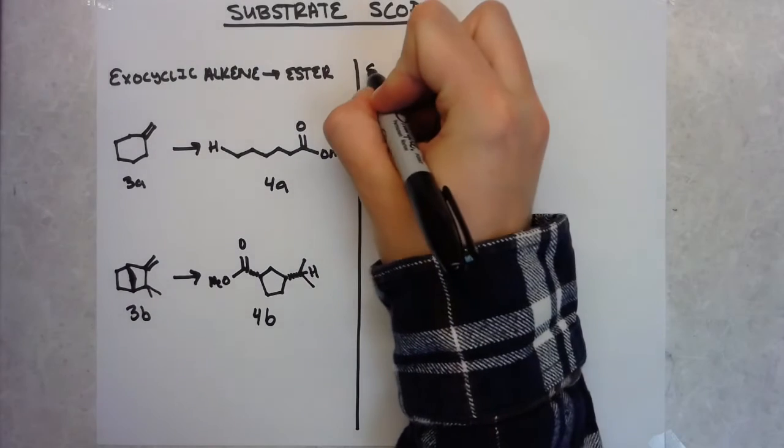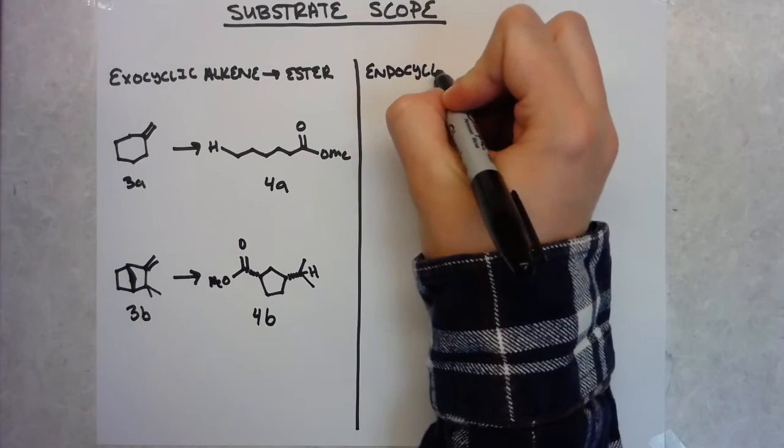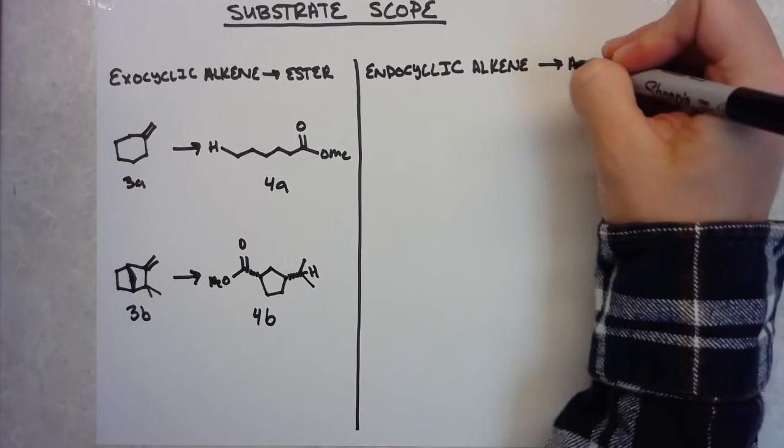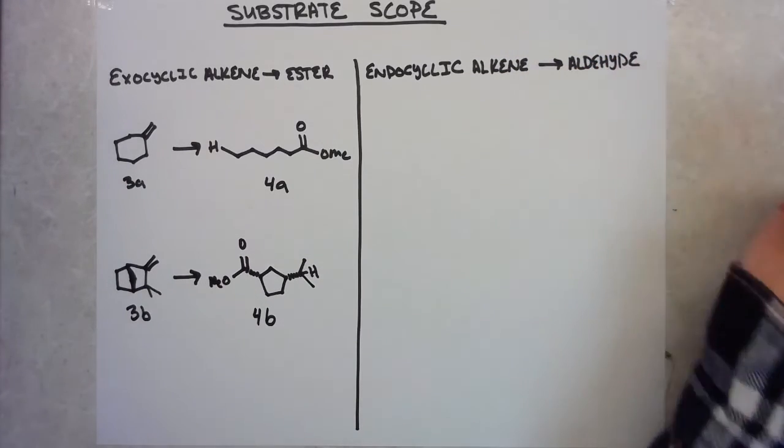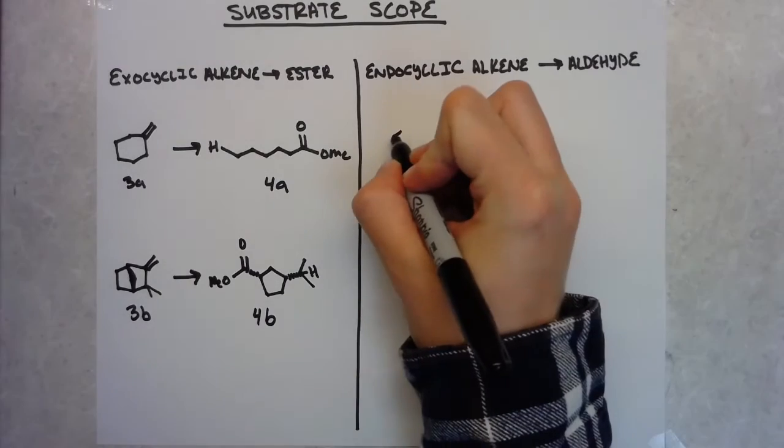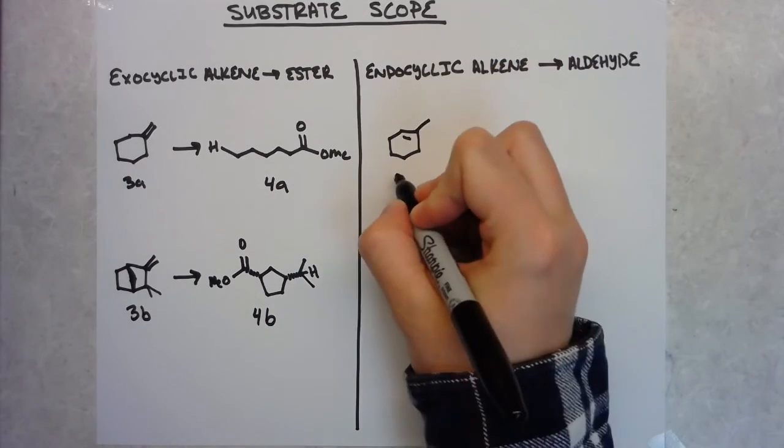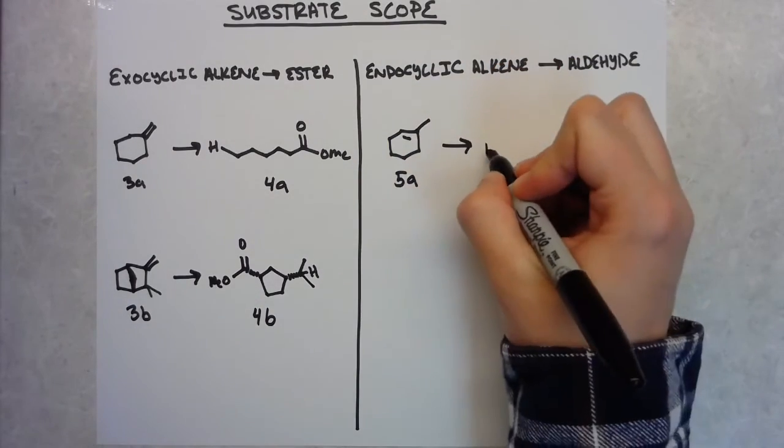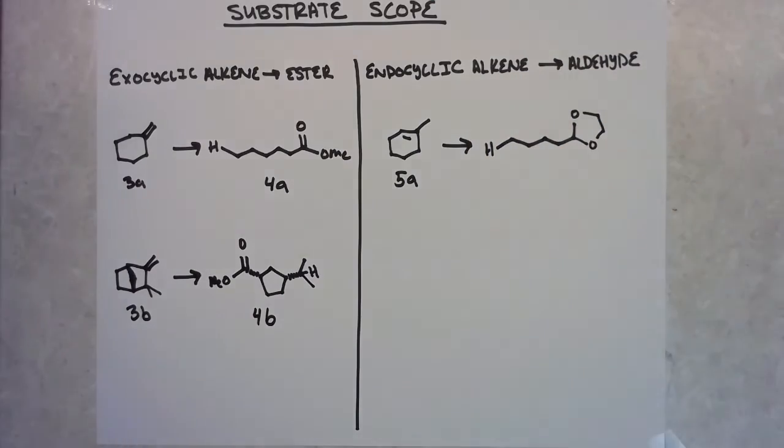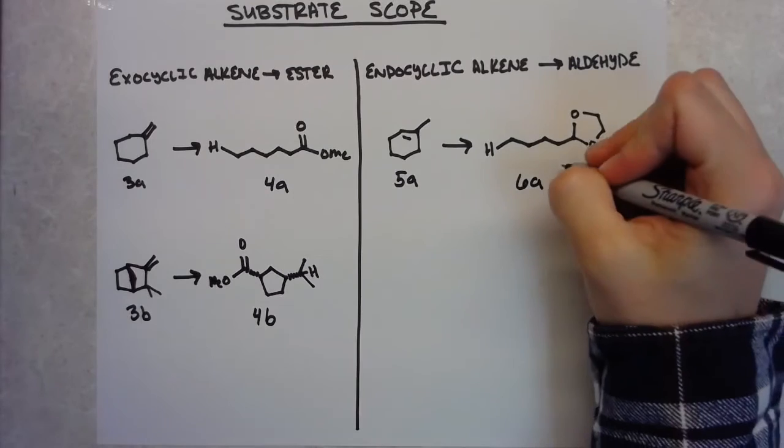So then in table three they take these ideas but use like internal alkenes so cyclohexene moieties so then this gives an aldehyde which they protect but it's the same idea of using these bridged bicycles to then leave a ring and so they show a lot of examples of four-membered rings that are now given an enantioselective product.